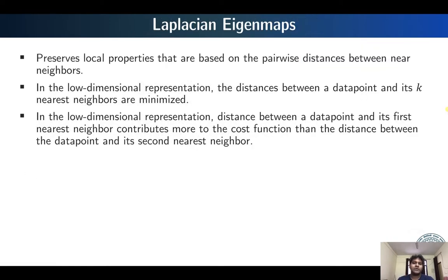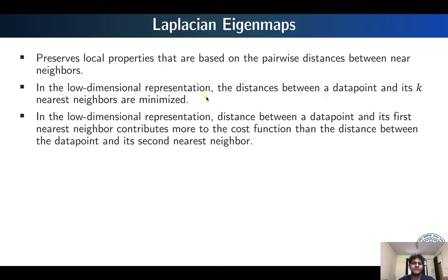Next we are going to talk about another sparse spectral technique known as Laplacian Eigenmaps. In LLE, local properties were associated with retaining the reconstruction weights. In case of Laplacian Eigenmaps, they instead try to preserve local properties based on pairwise distances between nearest neighbors. Essentially, it is trying to minimize the distance between a data point and its k nearest neighbors in the lower-dimensional representation — that is the goal of Laplacian Eigenmaps.